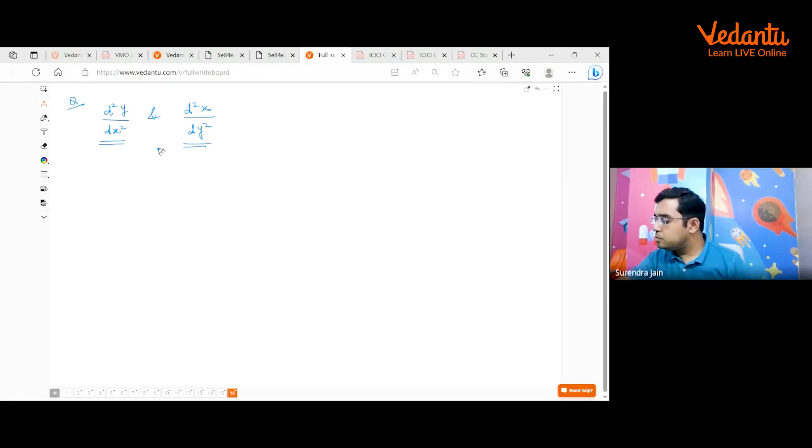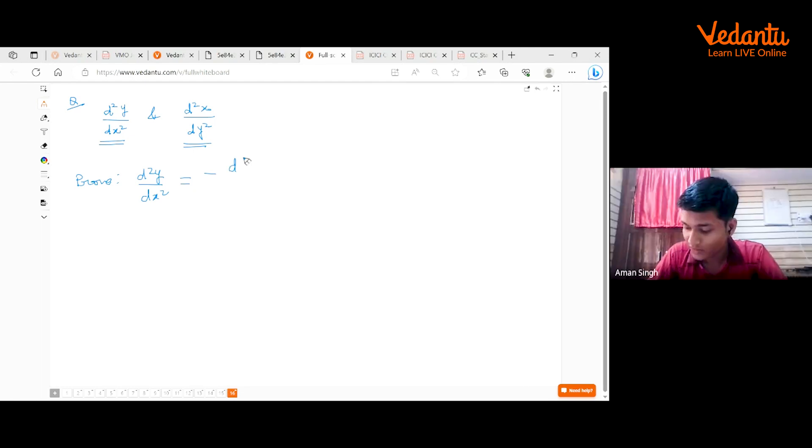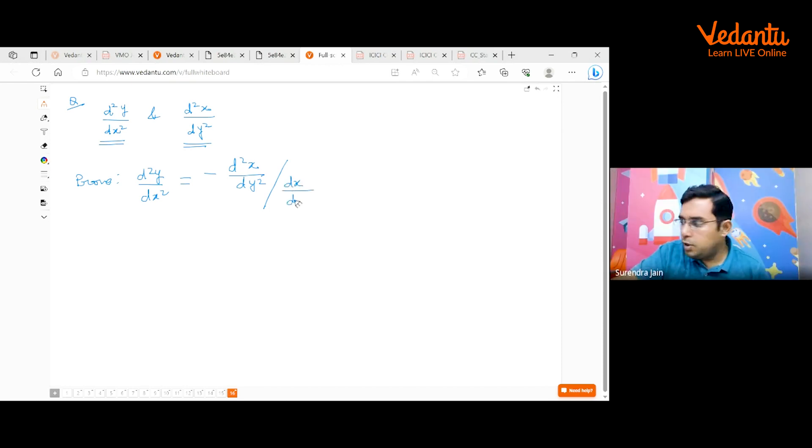I am modifying my question. I am asking you to prove that d²y/dx² is equal to minus d²x/dy² upon (dx/dy) whole square? Yes, sir. See, this is what I am now rephrasing my question that you have to prove this. I think you got square, but it is actually cube, not square.